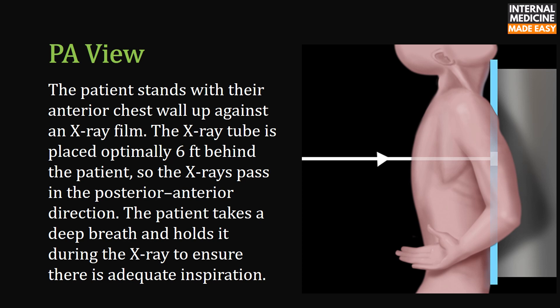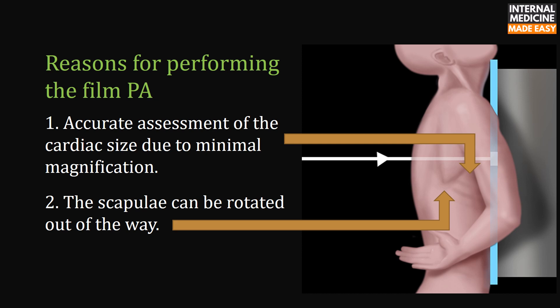In a PA view, the patient stands with their anterior chest wall up against an x-ray film. The x-ray tube is placed optimally six feet behind the patient so the x-rays pass in the posterior-anterior direction. The patient takes a deep breath and holds it during the x-ray to ensure adequate inspiration. Reasons for performing the film PA are accurate assessment of cardiac size due to minimal magnification, and the scapulae can be rotated out of the way.